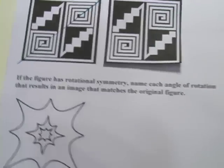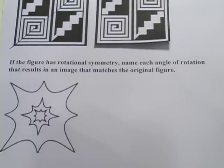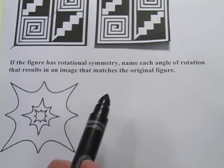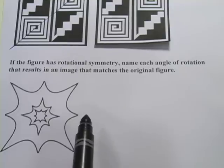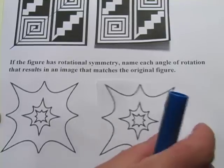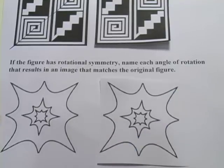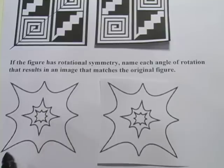Alright, one more. This one says if the figure has rotational symmetry, name each angle of rotation that results in an image that matches the original figure. And again, for this one I've cut out the same figure so we can try it out. But let's just look at this thing first.